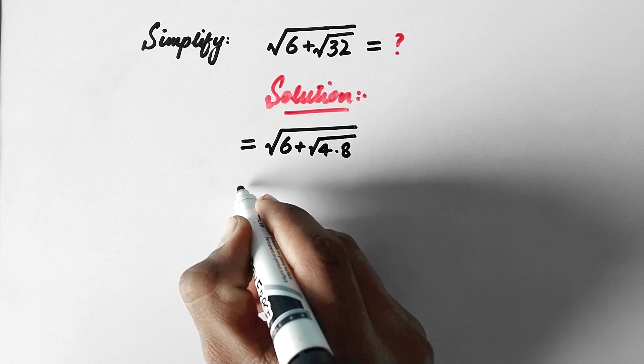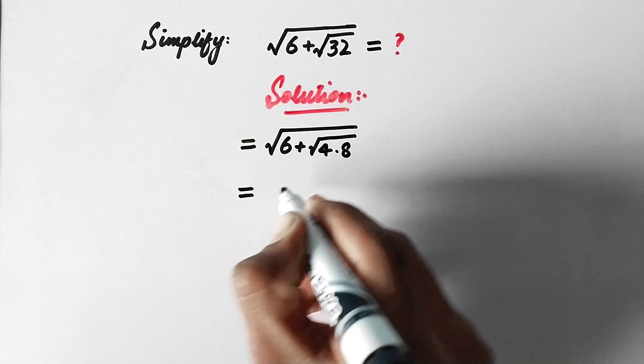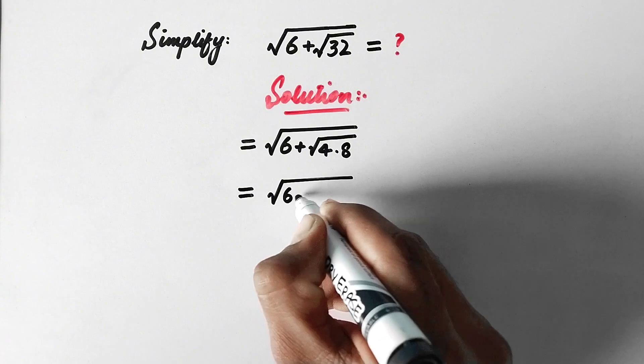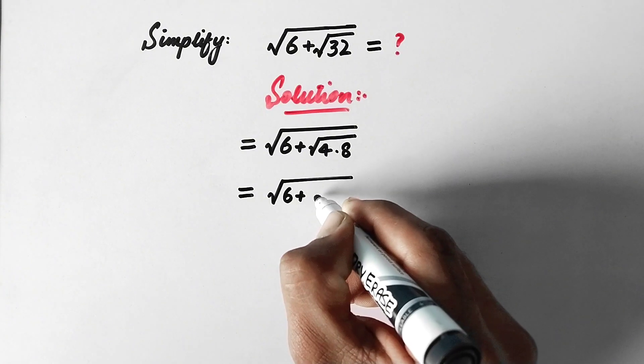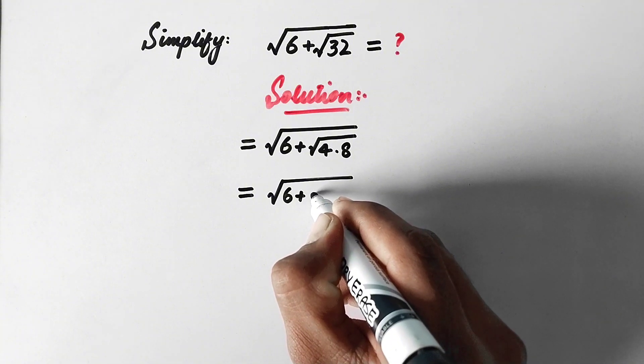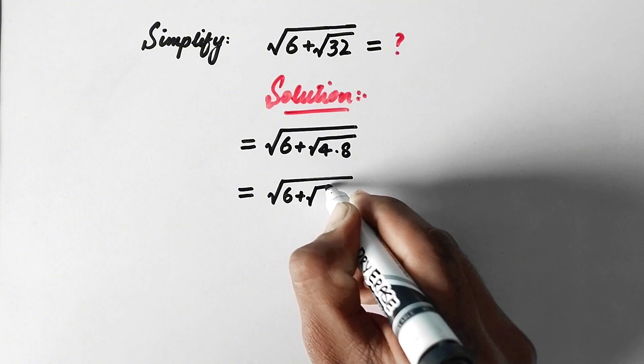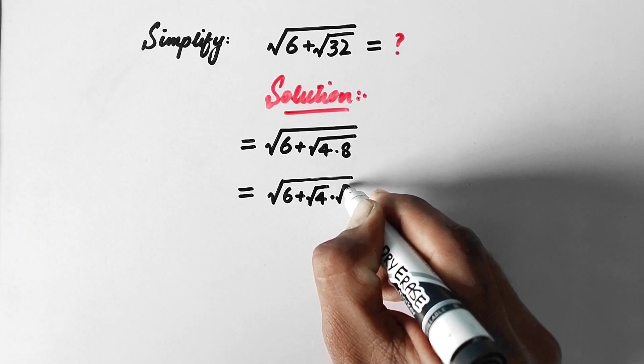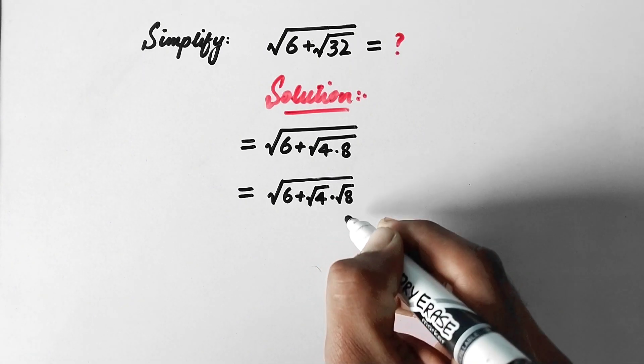Now in the next step we will write √6 plus this can be written with separate roots in this way: √4 times √8.